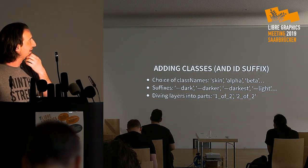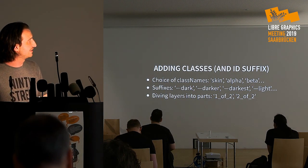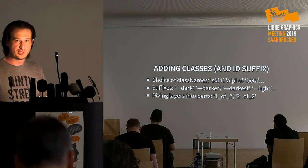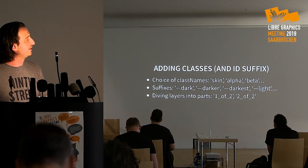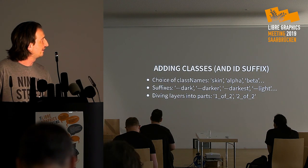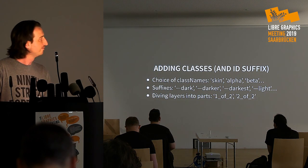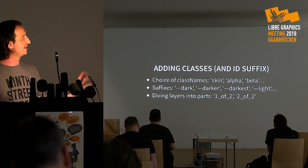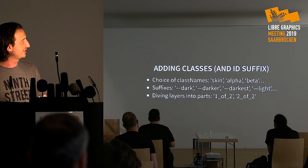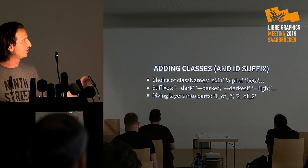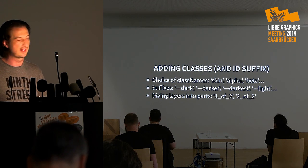I decided to use simple class names — I have the 'skin' class for skin, and for everything else I use Greek letters like alpha, beta, and so on, to separate different colors on each layer. To handle varying degrees of light and dark, I added suffixes: dark, darker, darkest, and light, lighter, lightest — giving me a range of seven colors, which was enough to achieve the level of quality I was looking for.